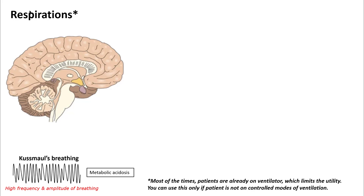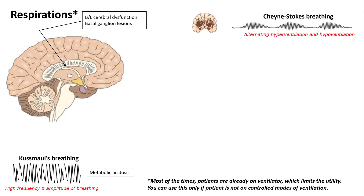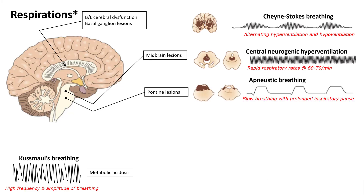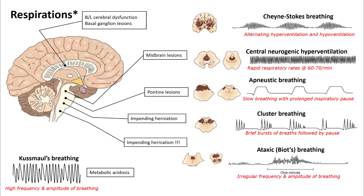Observe the respiration of your patients carefully. Most of the time patients are already on the ventilator, which limits the utility of this; however, you can still use it if the patient is on spontaneous breathing. Kussmaul breathing is seen in metabolic acidosis, with high respiratory rate and tidal volumes. Cheyne-Stokes breathing — alternating hyperventilation and hypoventilation — is seen in bilateral cerebral dysfunction and basal ganglion lesions. Central neurogenic hyperventilation, where the patient breathes very rapidly at 60 to 70 times a minute, is seen in midbrain lesions. Pontine lesions have characteristic slow breathing followed by a prolonged inspiratory hold — this is apneustic breathing. Cluster breathing or ataxic breathing, which is very irregular in frequency and amplitude, can suggest impending herniation.